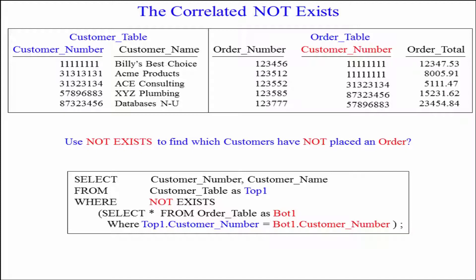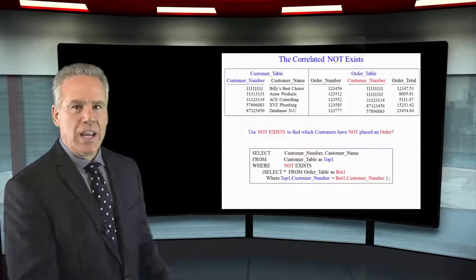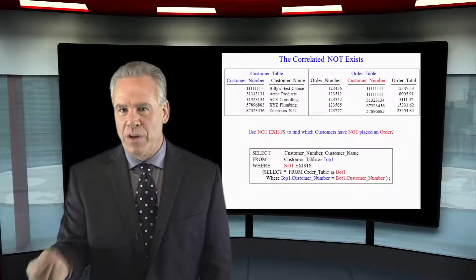Where not exists, then I can open the parentheses and say select asterisk from order table and give it an alias. So, this is where top one dot customer number equals bottom one dot customer number.